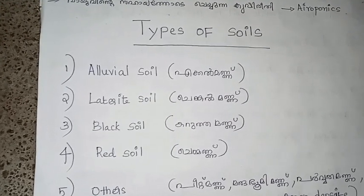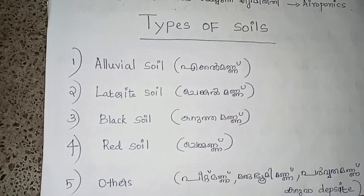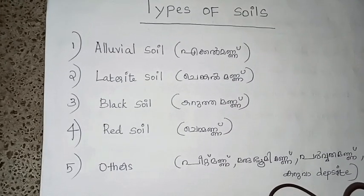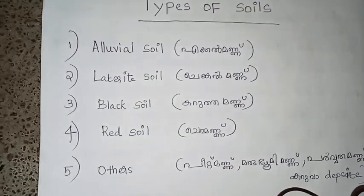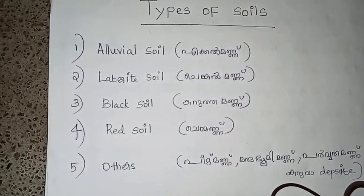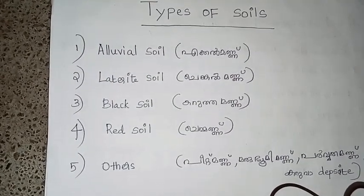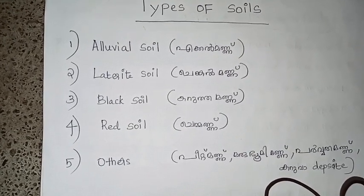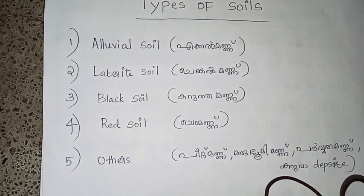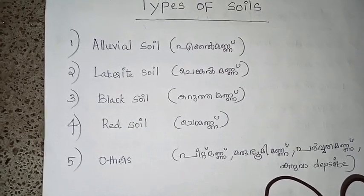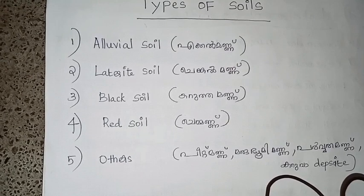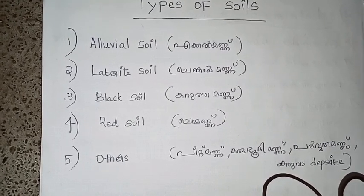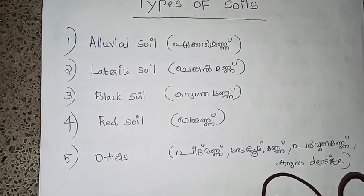There are 4 types — or 5 types. Alluvial soil, Laterite soil, Black soil, Red soil, and Others.